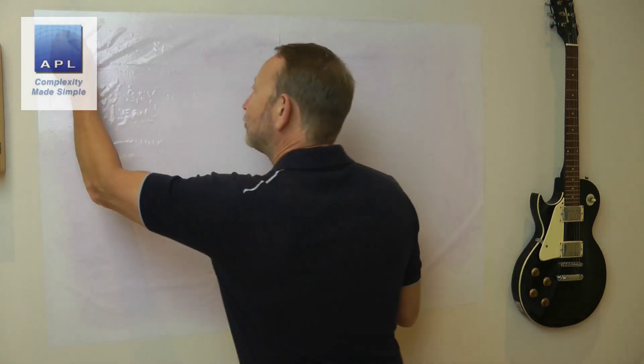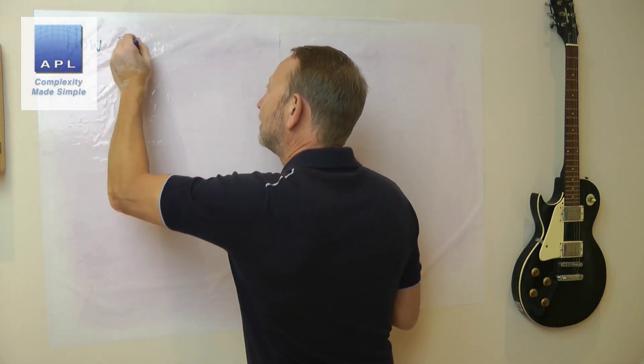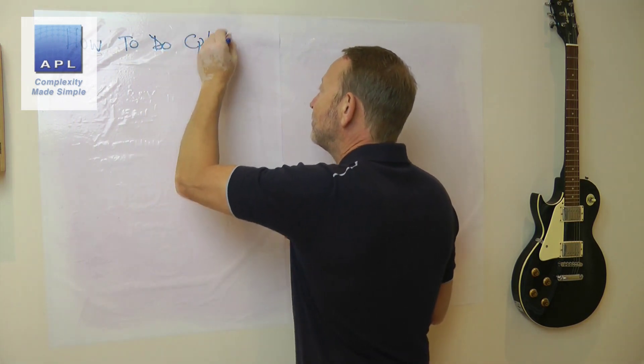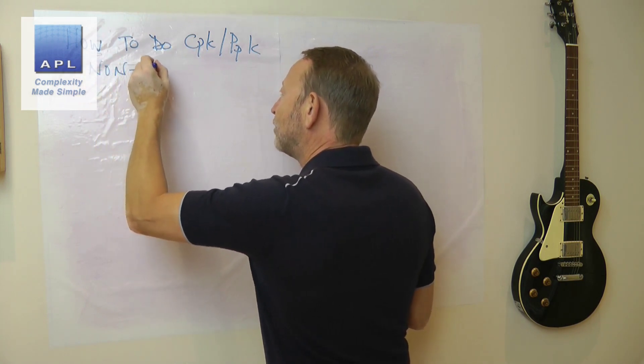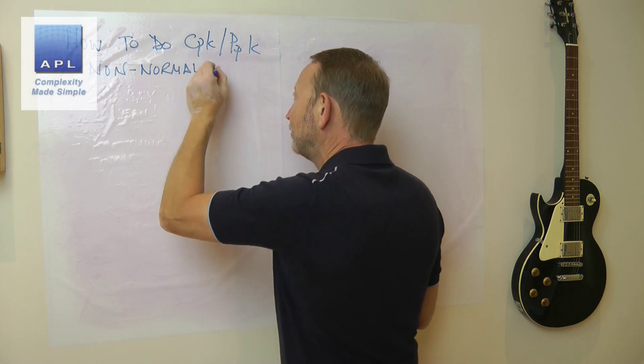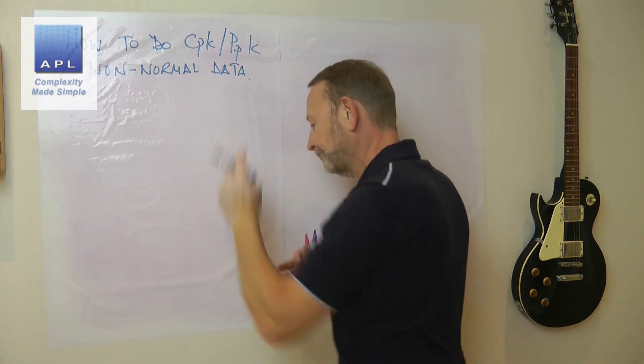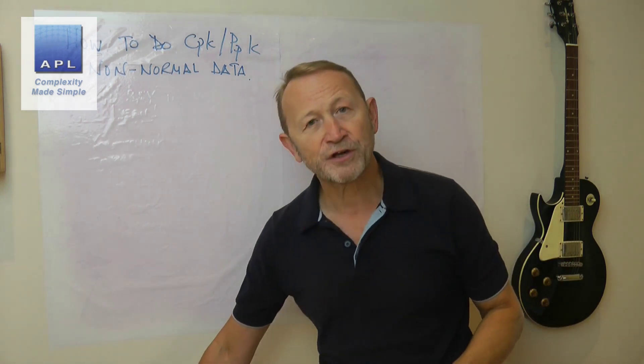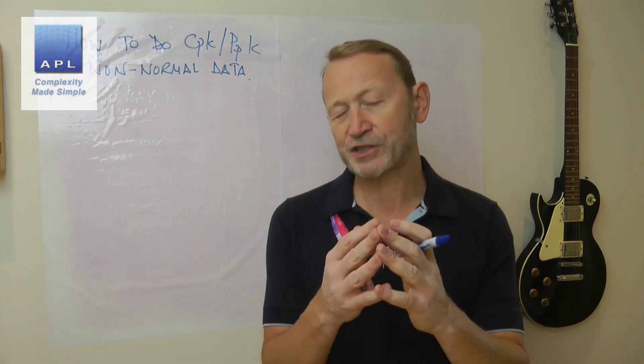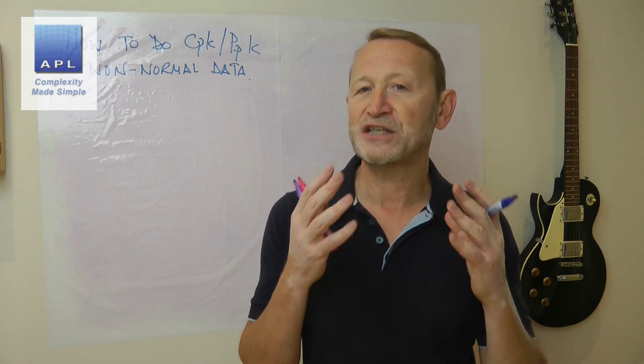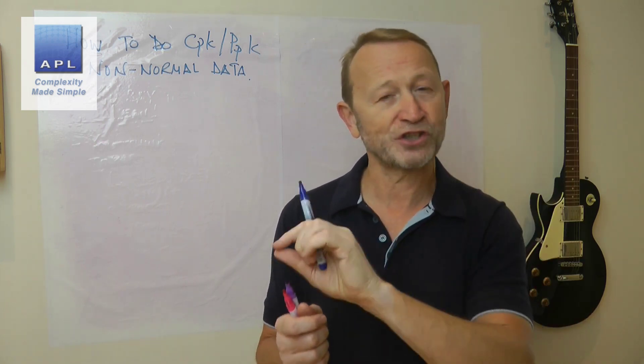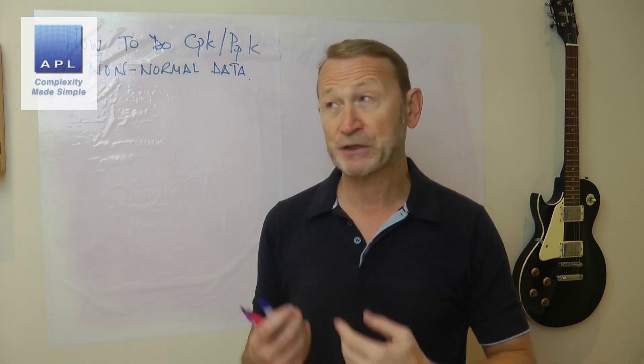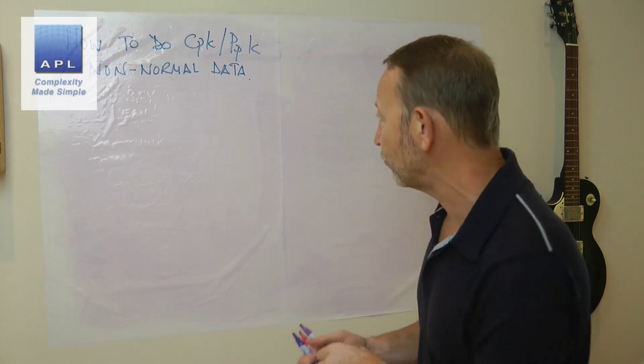So we're going to talk about what do I do if my data is not normal. How to do CPK PPK for non-normal data. Now the example that I'm discussing, they've actually said to me that the reason why the data is not normal is because there is a brick wall, one end of the scale that they are using.